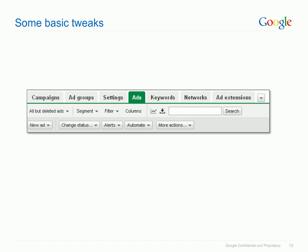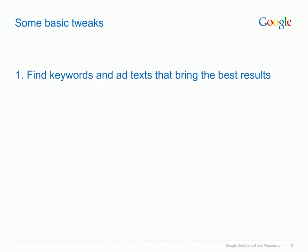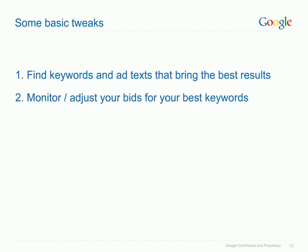You could also test new ad texts to see how these affect your results. Simply click the Ads tab and select the desired ad type from the New Ad dropdown field. Tweaking and testing allows you to find the keywords and ad texts that bring you the best results, while keeping an eye on your ad spend. Monitor bids for those keywords that bring you the most site visitors or clicks, and pause or delete those that aren't currently working for you, because they are either too expensive or don't bring you the expected traffic.